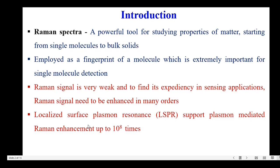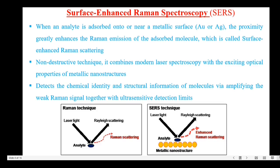That is LSPR, or localized surface plasmon resonance. Now let's get into the topic of surface enhanced Raman spectroscopy. When an analyte or molecule is adsorbed onto or near a metallic surface like gold or silver, the proximity greatly enhances the Raman emission of the adsorbed molecule, which is called surface enhanced Raman scattering. This technique is a non-destructive technique which combines modern laser spectroscopy with the exciting optical properties of nanometallic structures. SERS is more helpful in detecting the chemical identity of the molecule as well as the structural information of molecules by amplifying the weak Raman signal together with ultra-sensitive detection limits.